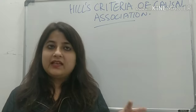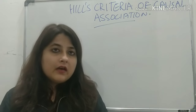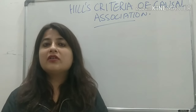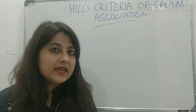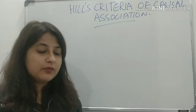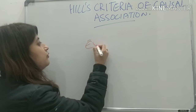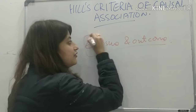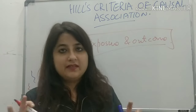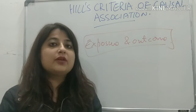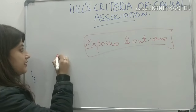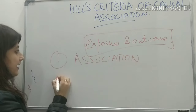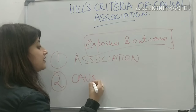Let us try to understand this topic. All the study designs taught so far — case control, cohort, cross-sectional, RCT — we are showing a relationship between two variables. Those two variables are exposure and outcome. The relationship between these two variables is depicted by two terms: association and causal association.